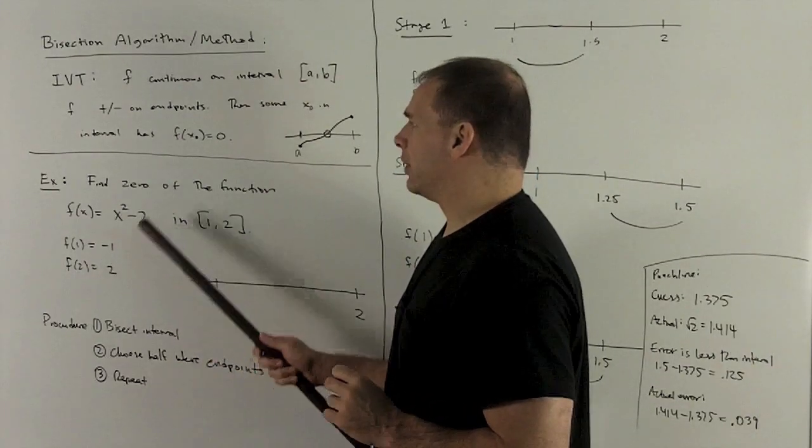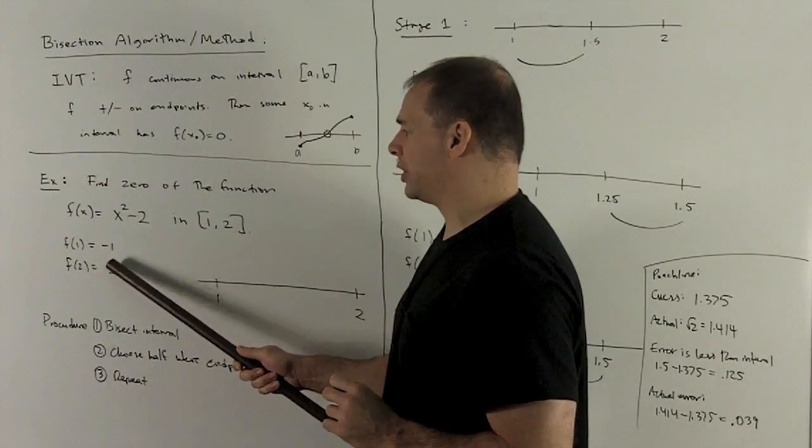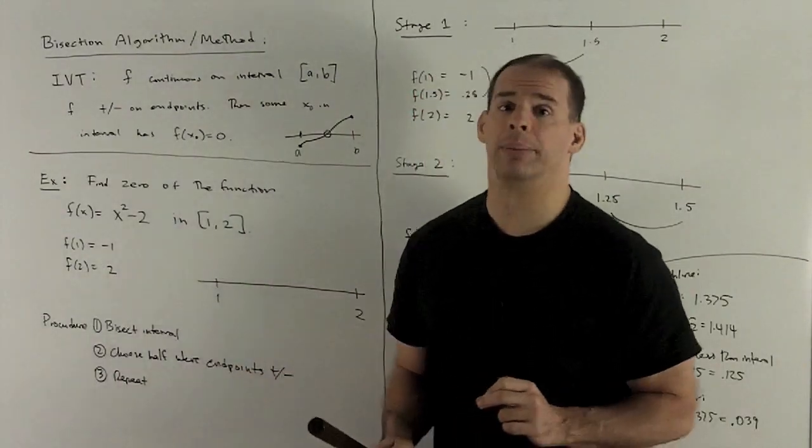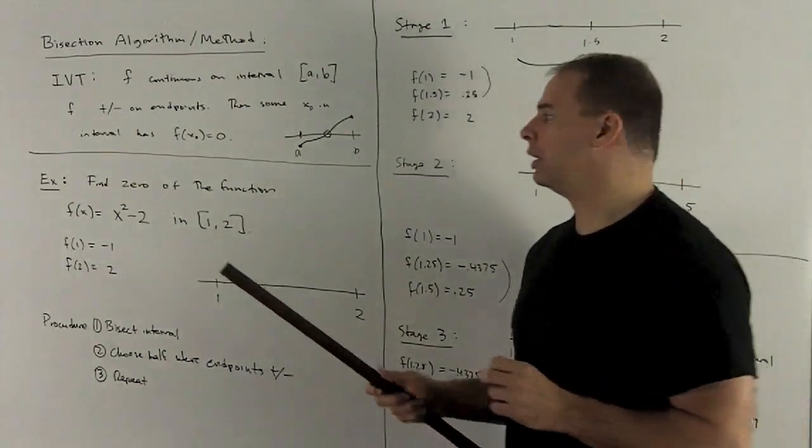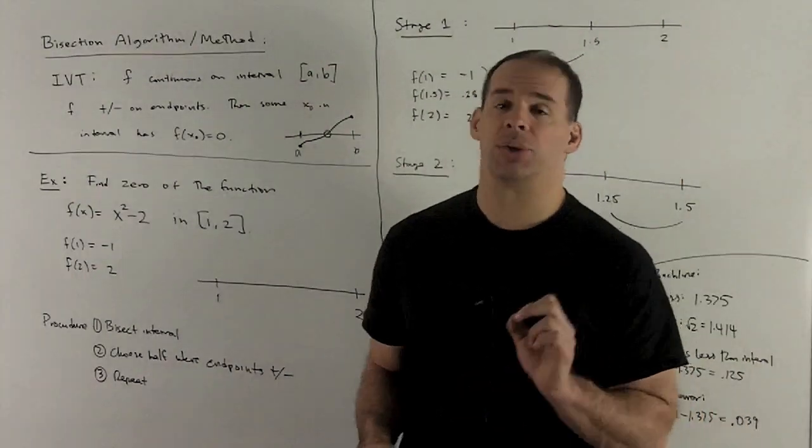So the Intermediate Value Theorem is telling me there's going to be some point in this region where we cross 0. Now, we also know, if you set this equal to 0 and solve it, we're going to get two answers. We're going to get plus and minus square root of 2.